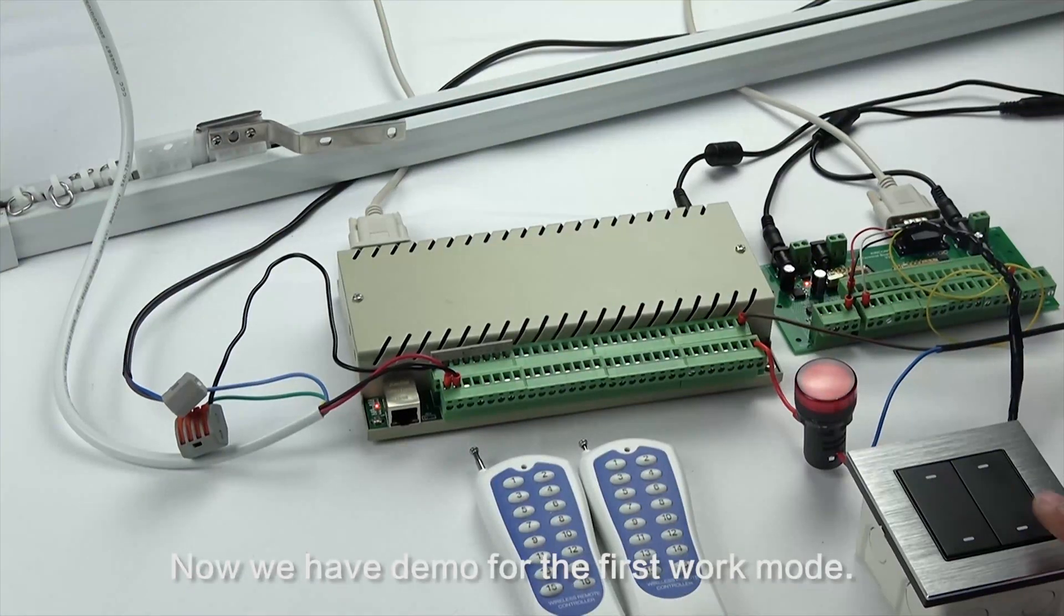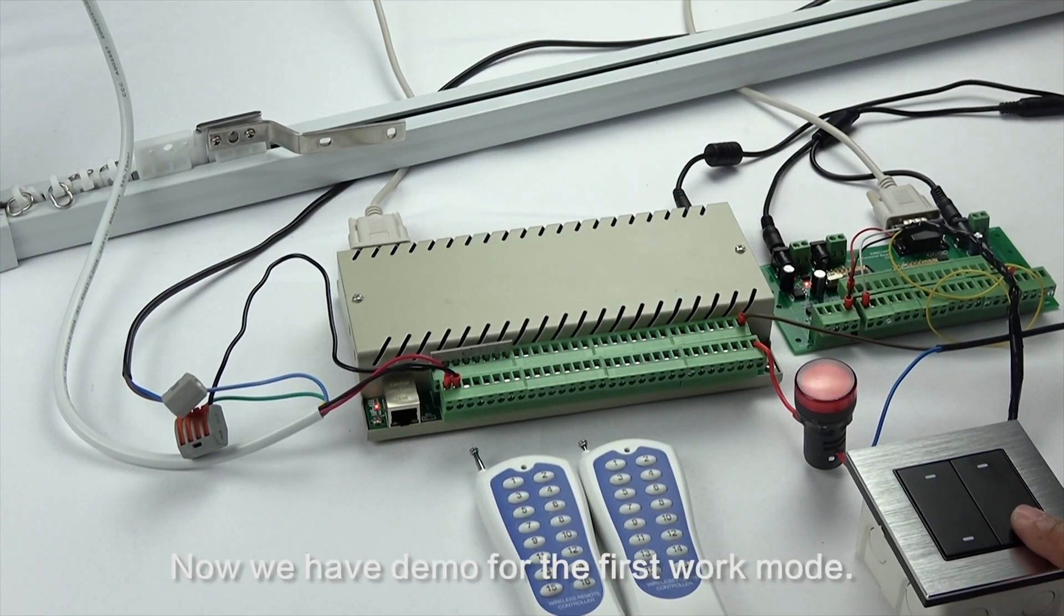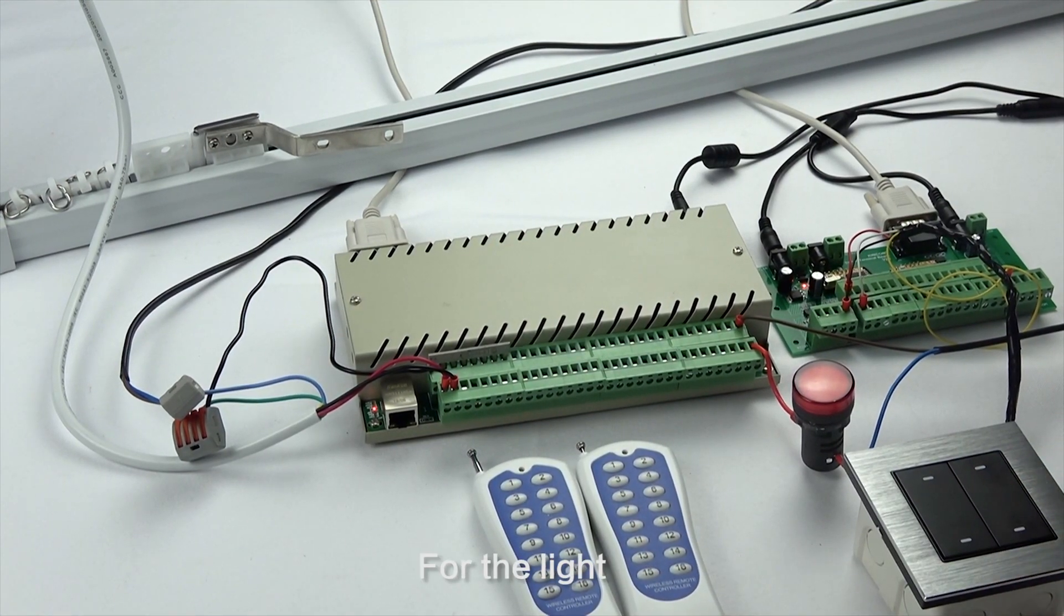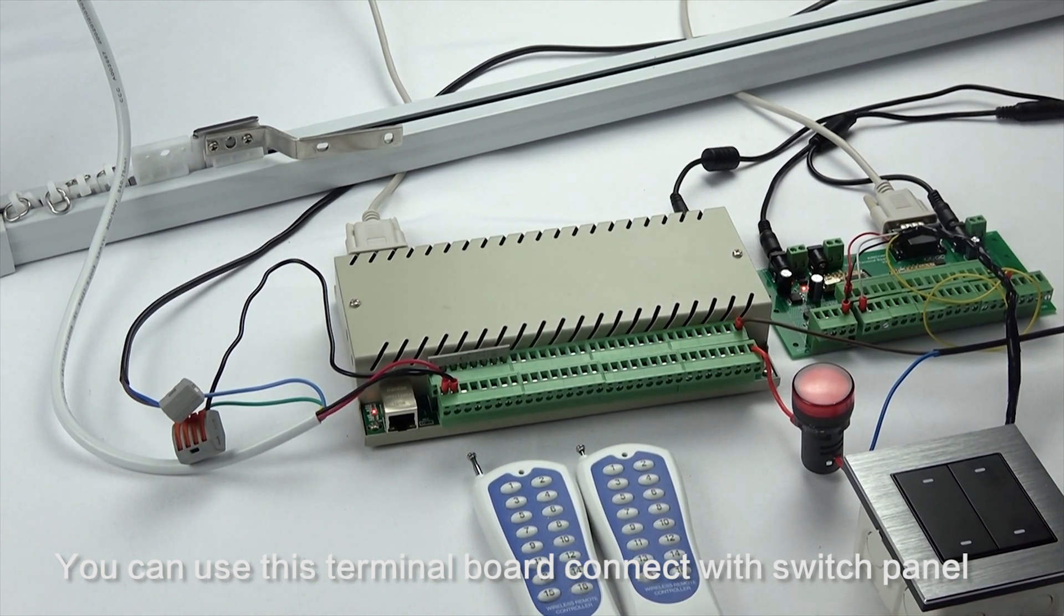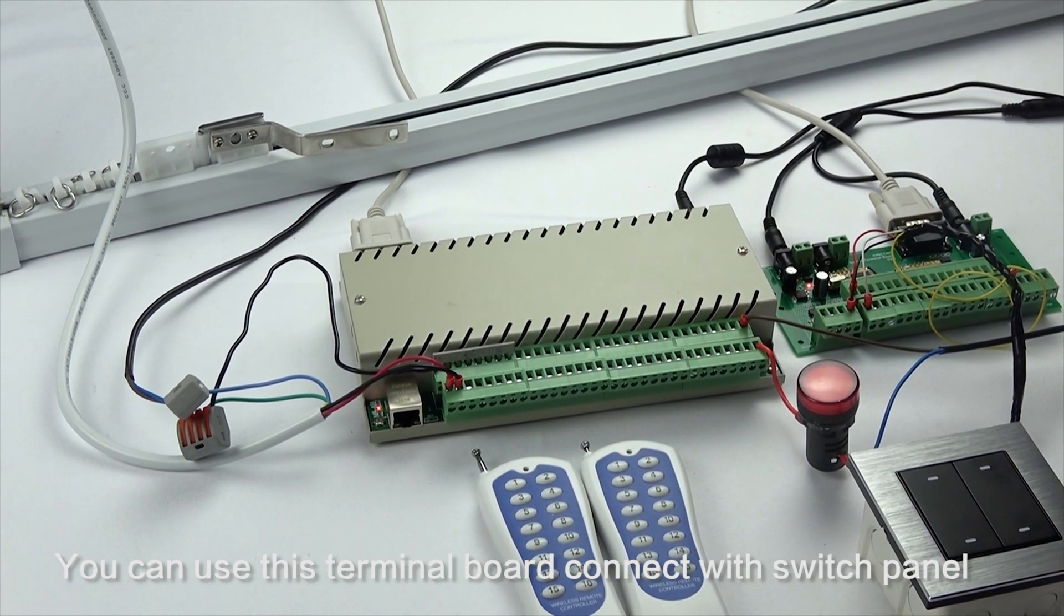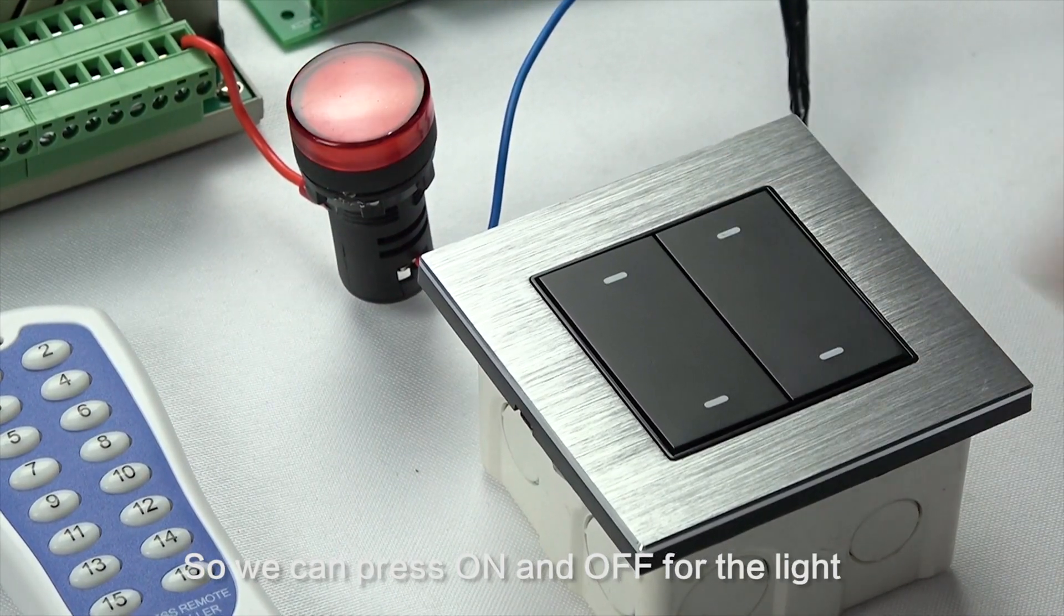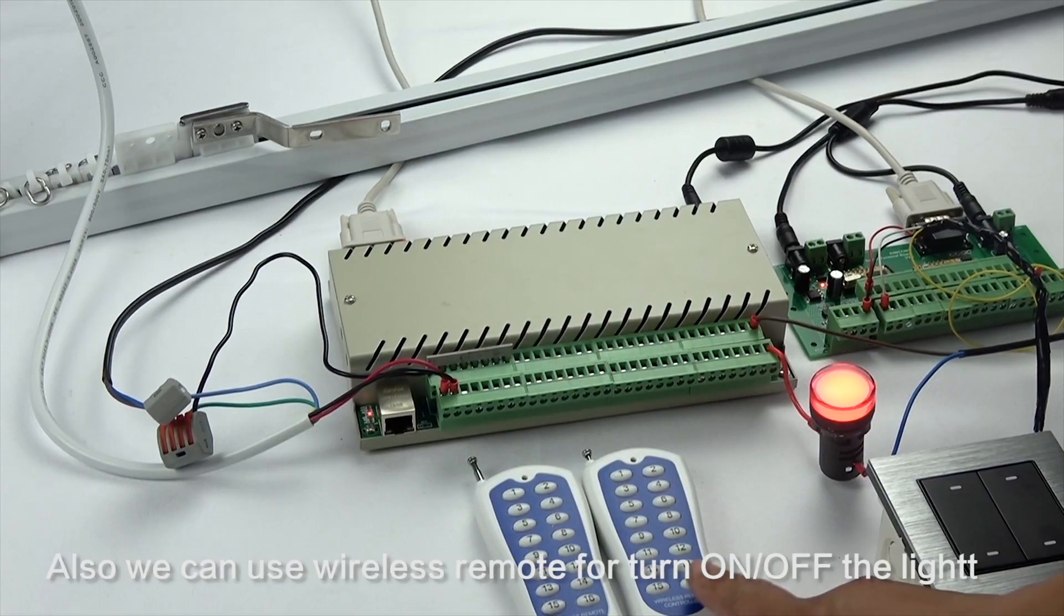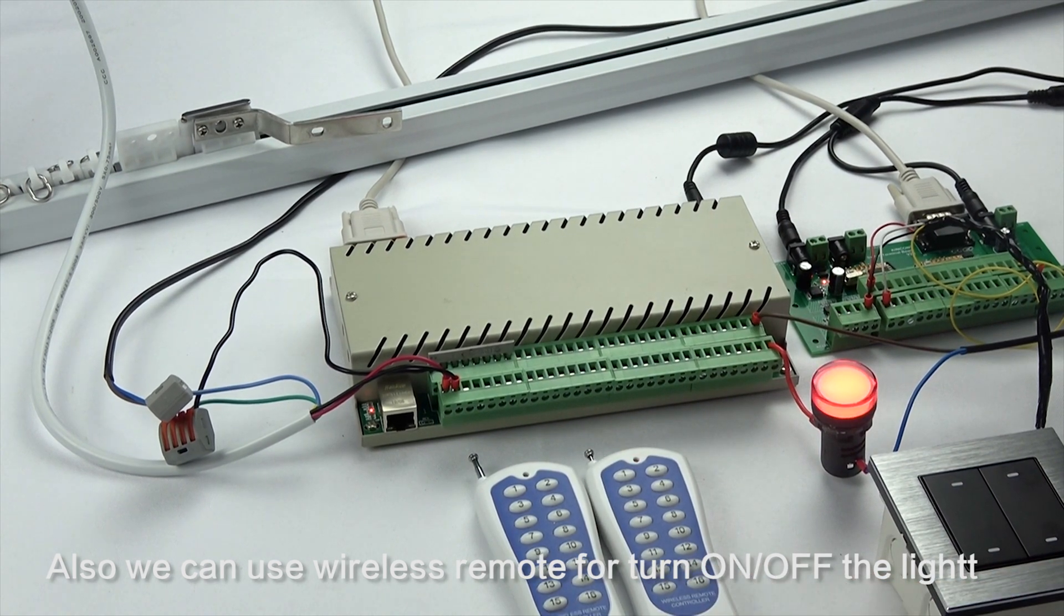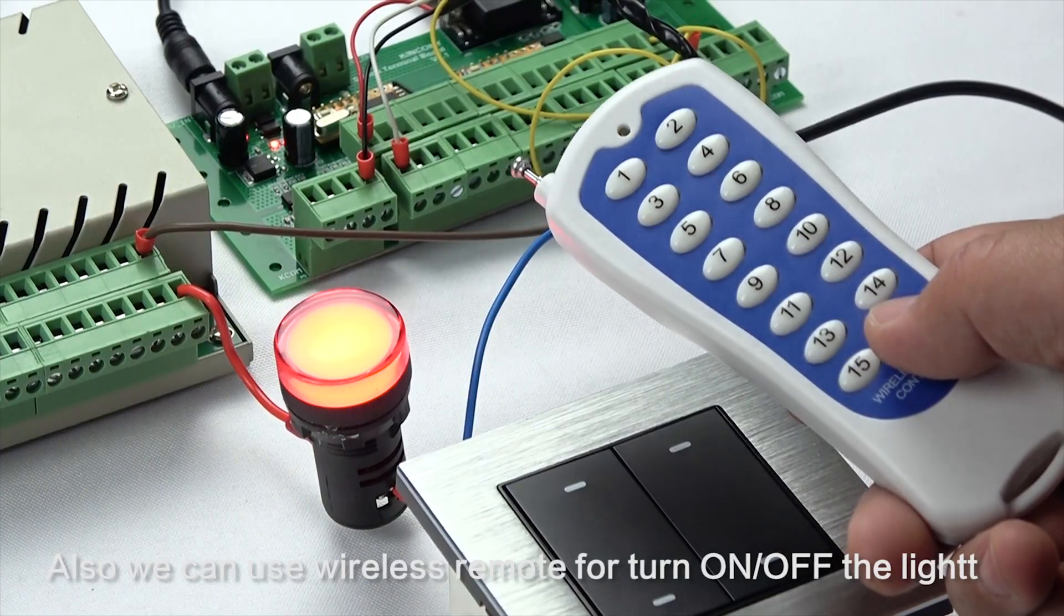Now we have a demo for the first work mode for lights. You can use this board to connect with the switch panel, so we can press on and off for the lights. Also, we can use the wireless remote to turn on and turn off the lights.